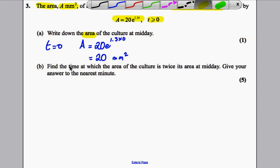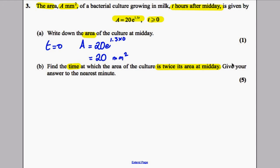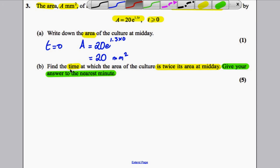Now the next part says, find the time at which the area of the culture is twice its area at midday. Here's a very important point that students forget: give your answer to the nearest minute. This formula here, t is in hours, so when you work out t you will get how many hours it is. You need to convert that to minutes, and more than that, it's best practice to give it as a time after midday, not just how many minutes, but what time that would be.